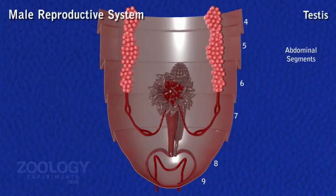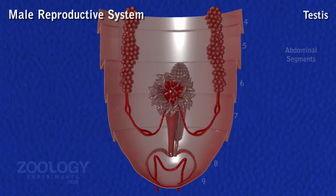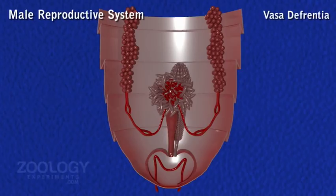In adults, testes become non-functional and greatly reduced in size. The paired vasa deferentia, one from each testis, run posteriorly and downward to open into the ejaculatory duct.